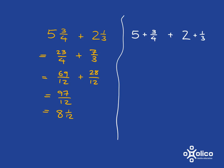Now we can simply add the whole numbers together, so we get 5 plus 2 is 7, and then we have to add the 3/4 and the 1/3, and that's a simple fraction addition to do.